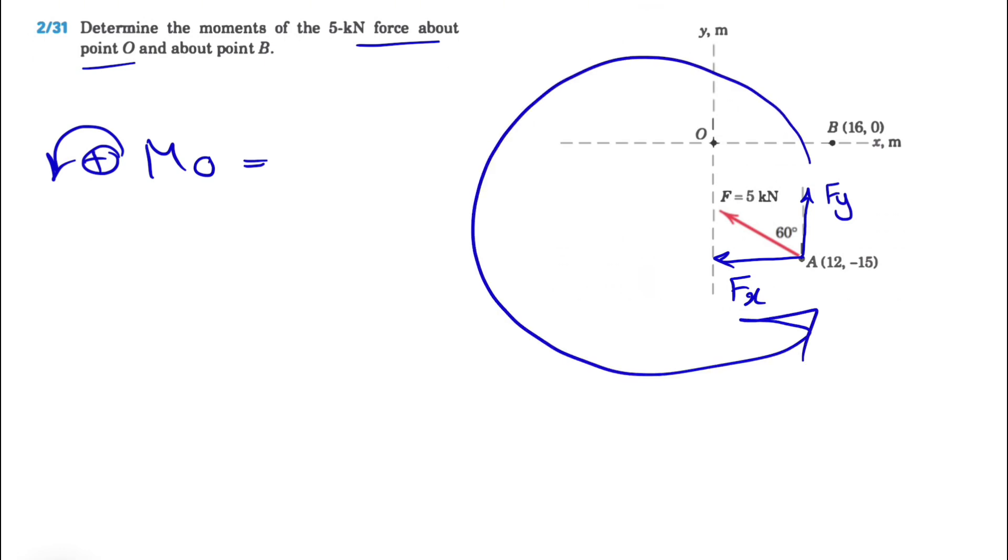FY, we can see that the moment is in this direction, so counterclockwise, so we have a positive moment. We'll have force times the vertical distance, which is what we have from here to here.